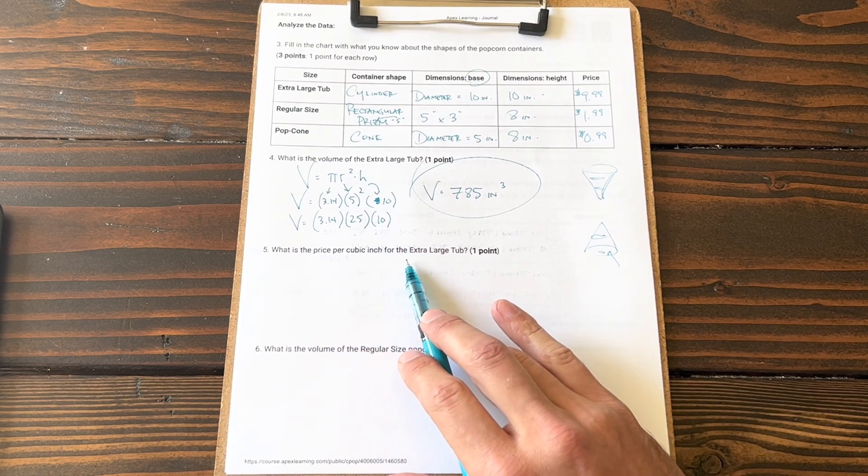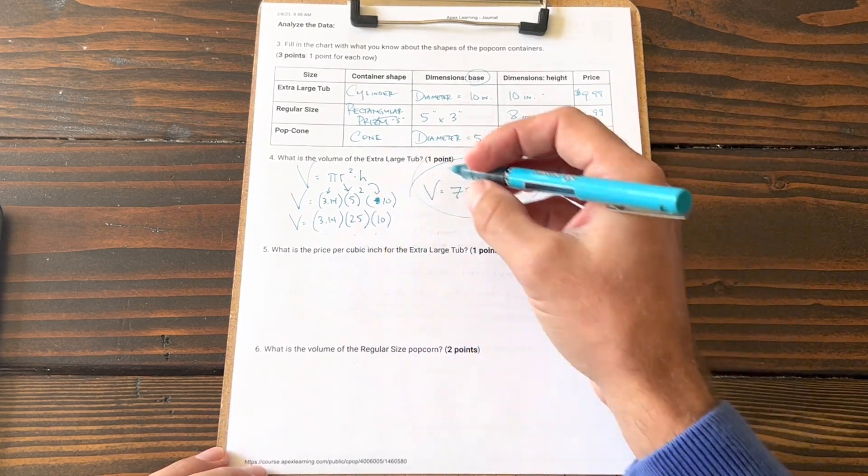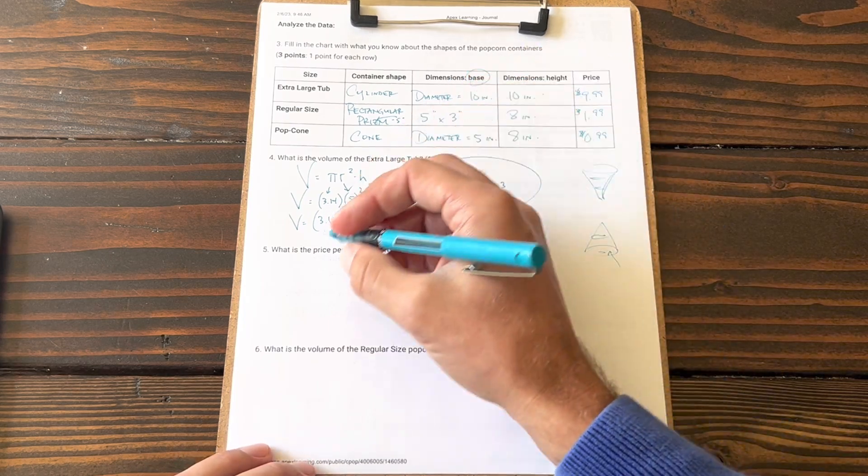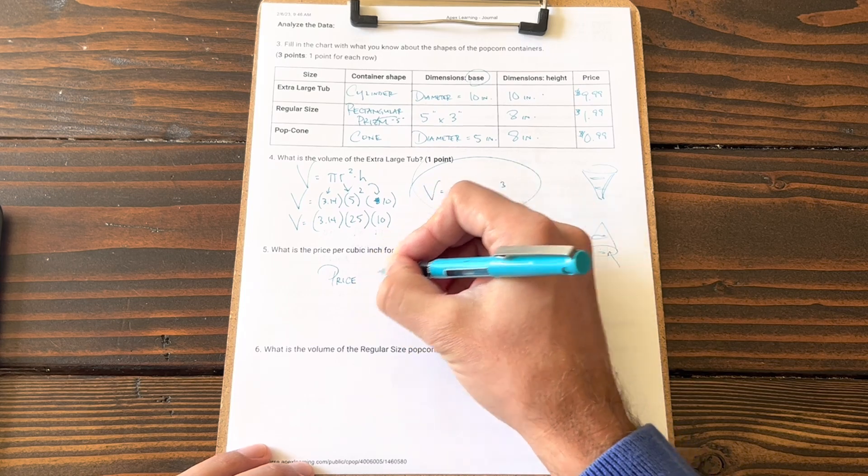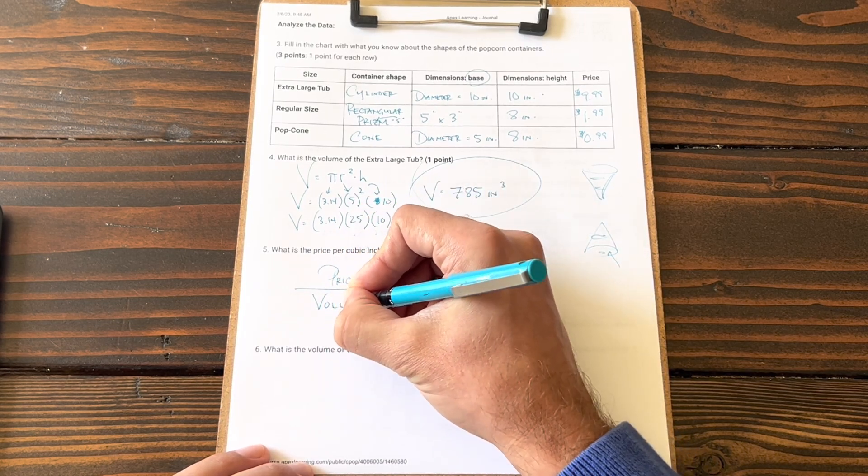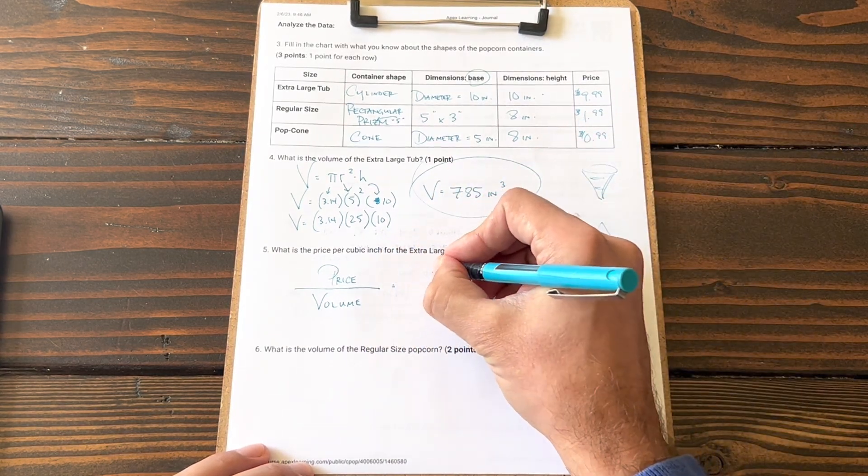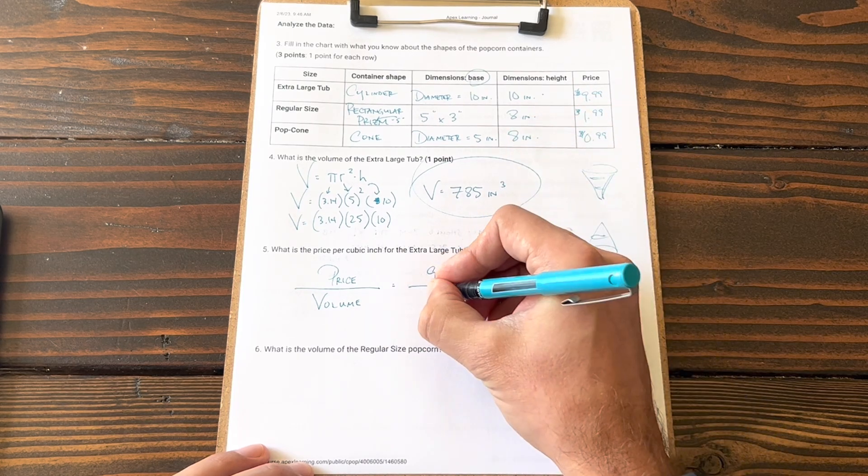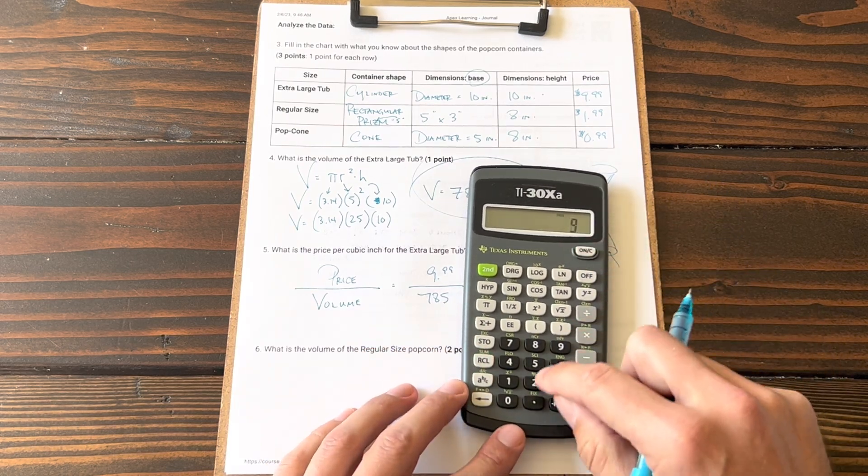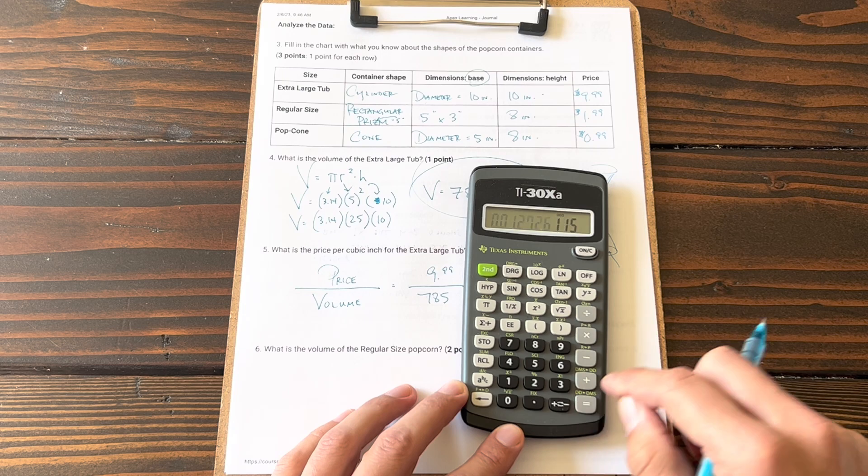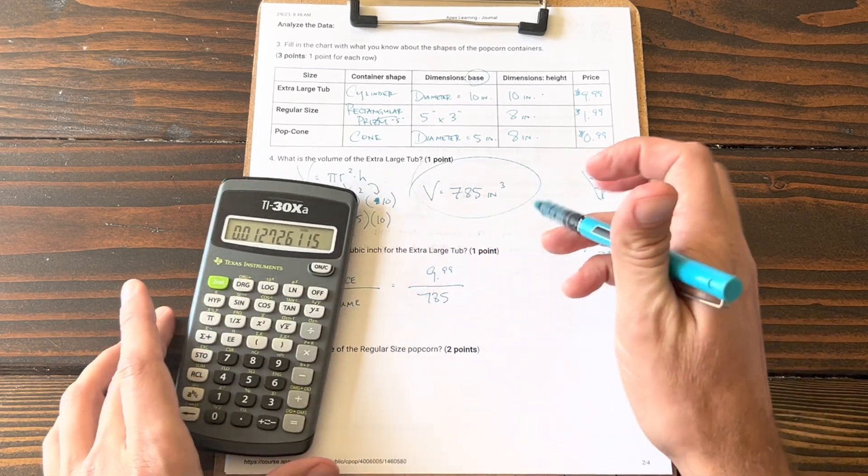What is the price per cubic inch of the extra large tub? So price per inch, we're going to be doing essentially a unit rate conversion. What we do from the lesson is take the price and divide by the volume, and we'll have the price per cubic inch. So price $9.99, I'm going to divide that by the volume which is 785 inches cubed.